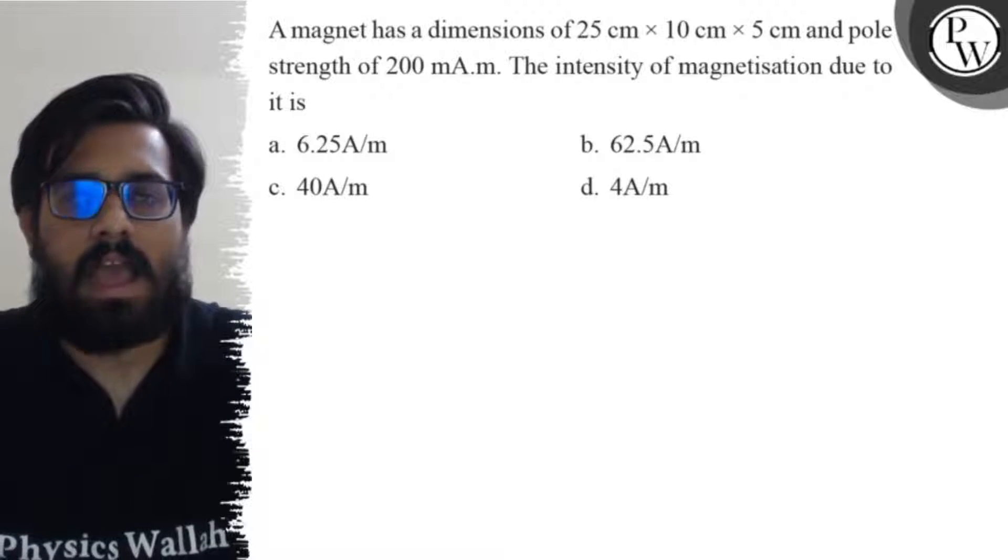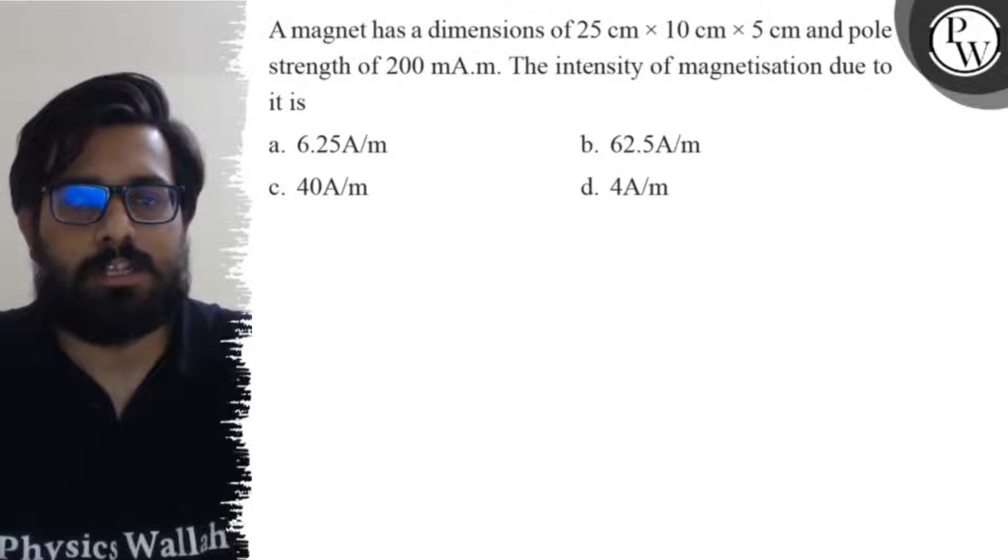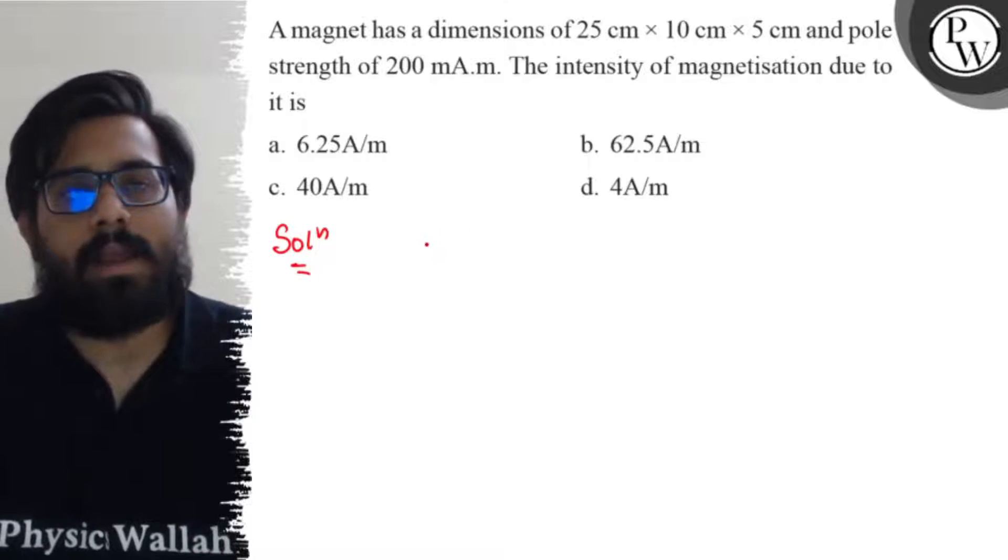The options are (a) 6.25 ampere per meter, (b) 62.5 ampere per meter, (c) 40 ampere per meter, and (d) 4 ampere per meter. So in this question we have a bar magnet having these dimensions.